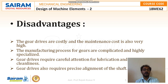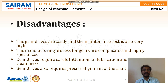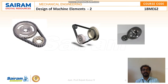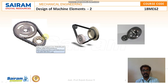Gear drives also require precise alignment of the shaft. The shaft axis should be set at the proper angle — only then will the proper application we are looking for take place. Here you can see some examples of toothed wheels, that is, the gears we discussed.